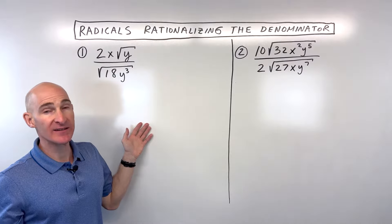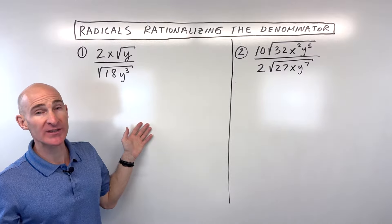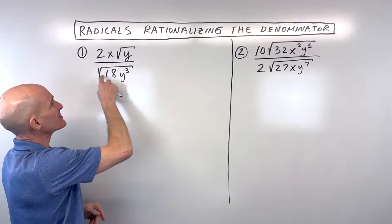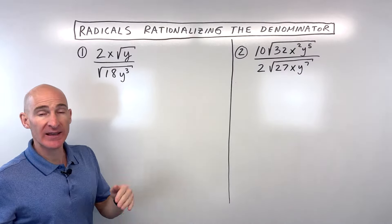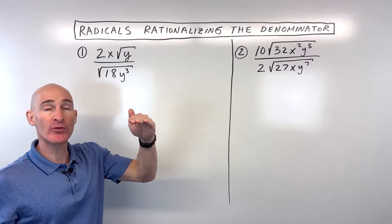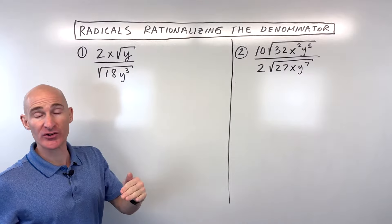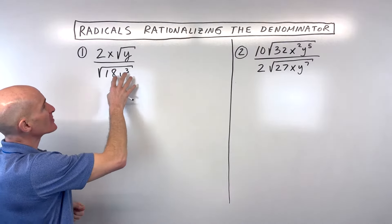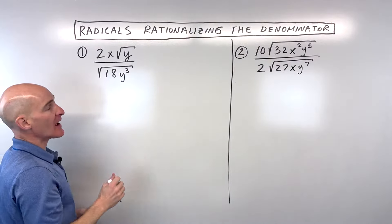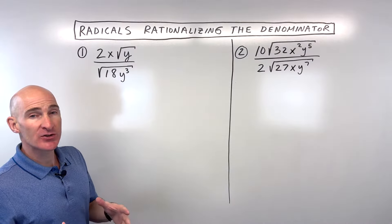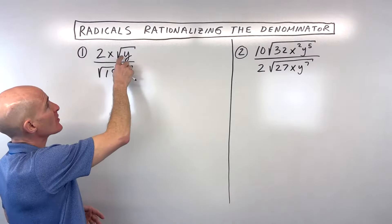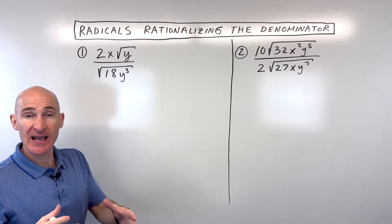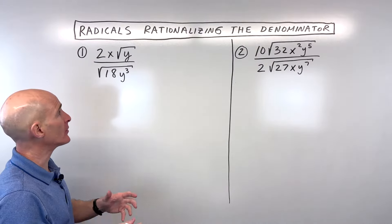So how do we rationalize the denominator? What does that even mean? When you have a radical like this, this is an irrational number, meaning it can't be written as a ratio of an integer over an integer. So what we want to do is get rid of the radical in the denominator. But first, let's try to simplify these radicals as much as we can, and then we'll see how we can eliminate that radical in the denominator.